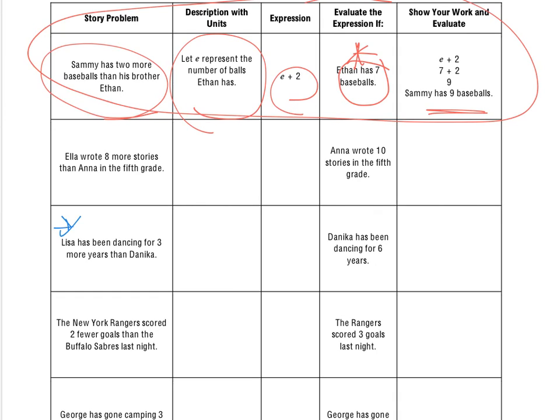So, there's two different expressions. If I knew Lisa's age, so if I have L here, and I'm going to put this over in the expression piece. If I'm L, which is Lisa, she's been dancing for three more years than Danika. If I take away three from Lisa, that'll equal Danika. If I have Danika, then I know I have to add three to get Lisa.